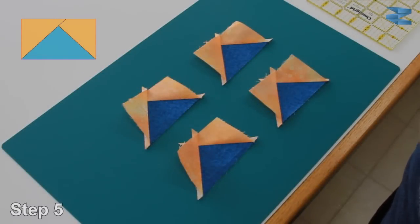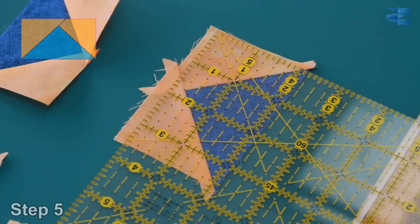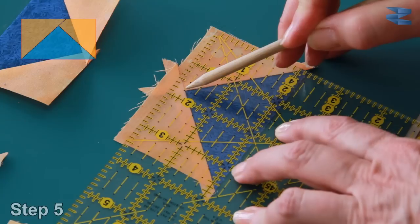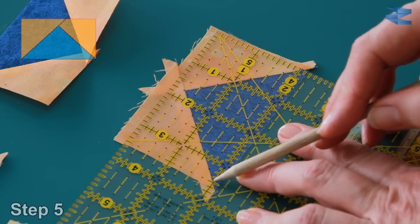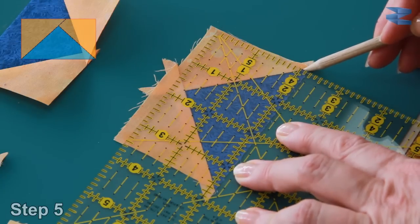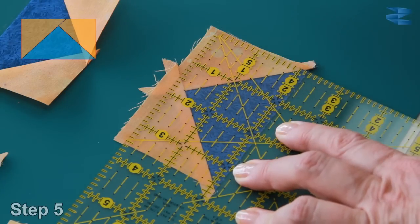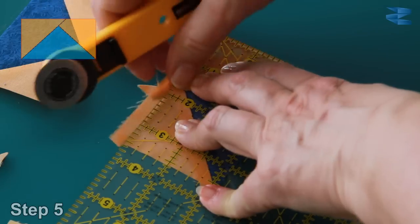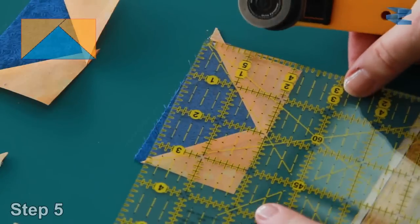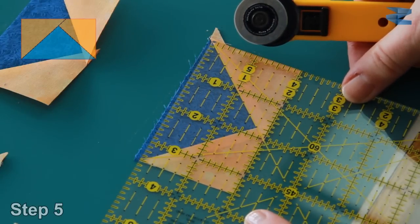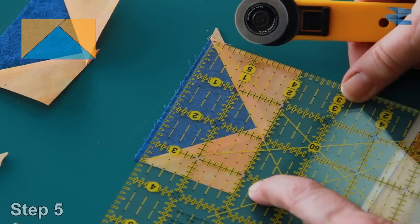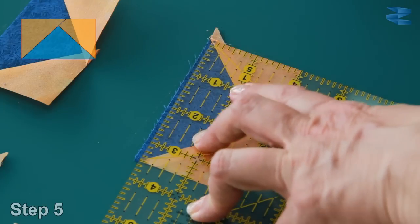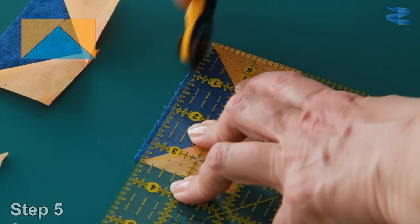Now we're going to trim down the flying geese. Now you can see that I put the one and three quarter inch by one quarter mark at the top of the V, and the three and a half inch and the two inch marks all line up at the intersections between the blue and the orange. And we trim off the side and the top. Flip it around. Line up the three and a half inch here, the two inch on the bottom. You see as well that this corner of the ruler is on that sewn line there. Trim off the side and off the top.